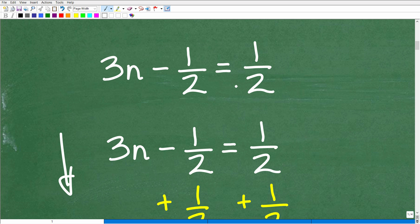When we're solving basic linear equations, what we want to do is get all of our variable terms to the left and all of our numbers to the right. Okay, so in other words, we have 3n minus 1 half is equal to 1 half. Well, my variable term, 3n,